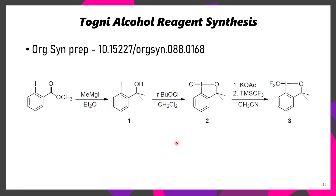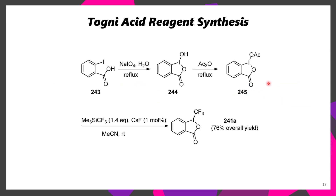If you're curious about how Togni reagent is made, the alcohol-based reagent actually has an OrgSyn prep, where, starting with 2-iodo-methylbenzoate, it's possible to prepare the alcohol using methylmagnesium iodide, followed by synthesis of the hypervalent iodine chloride, followed by substitution with potassium acetate, and finally TMS-CF3, affording Togni alcohol reagent 3. In the case of the acid reagent, it's even easier to prepare, and there are multiple different preps you can follow. I've prepared a one-pot prep before that I think was from Org. Lett., and it was the worst filtration of my life, so I would do a stepwise preparation if I were you.